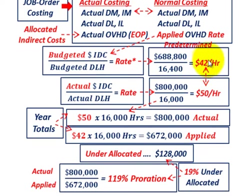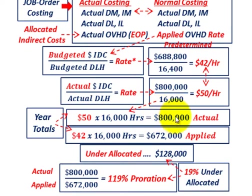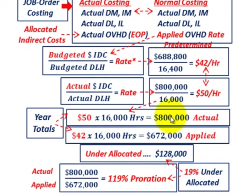So we've got a difference — the applied rate we used was $42 per hour versus our actual rate of $50 per hour. To determine our total overhead cost: for the actual amount, we take the actual overhead rate of $50 per hour times the 16,000 actual direct labor hours, giving us $800,000 in actual overhead. For what we actually applied, we take the predetermined $42 per hour times 16,000 actual hours, giving us $672,000 applied. The difference between $800,000 actual and $672,000 applied gives us an under-allocated amount of $128,000 that we need to adjust for.